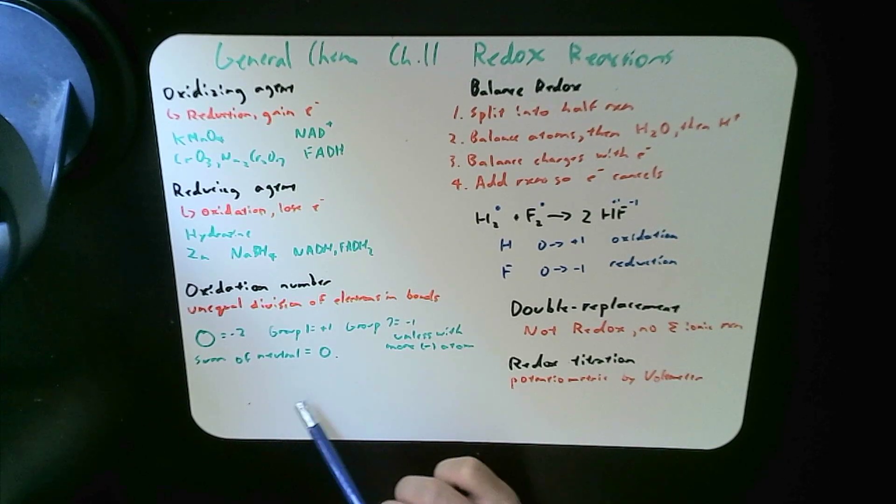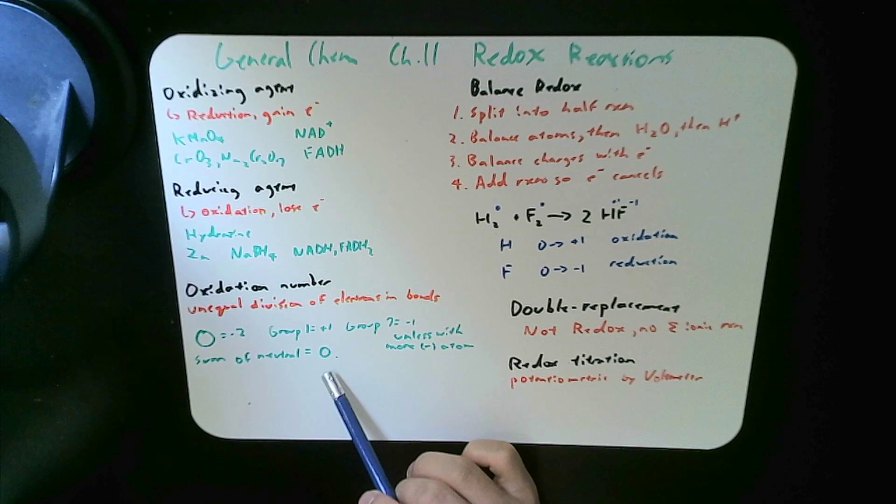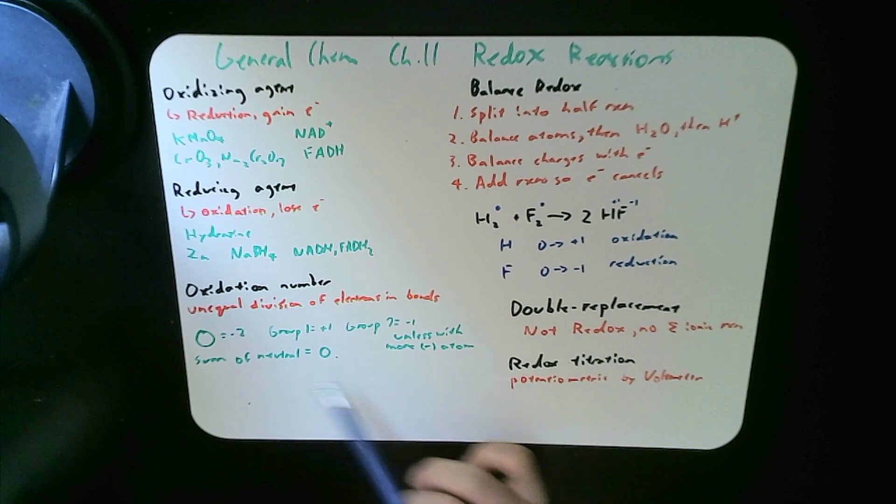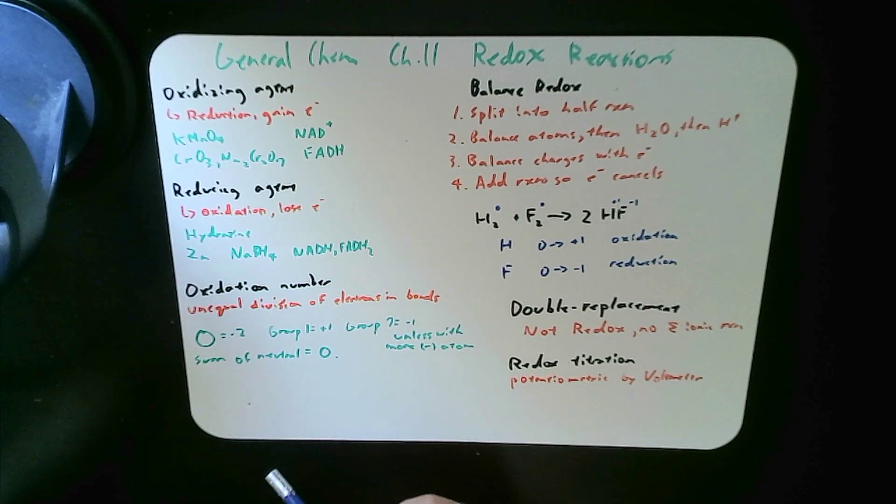So for example, H2O, oxygen is designated as 2 minus, so each of the H is set plus 1, because the entire compound, if it's neutral, it's said to be 0.